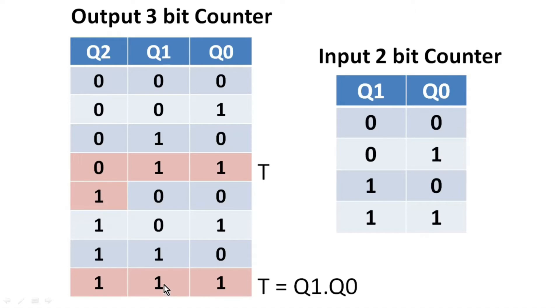Similarly, at this point of time when Q1 and Q0 both are high, Q2 has to toggle and it has to go 0.